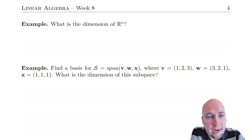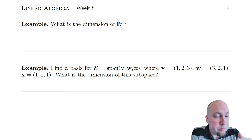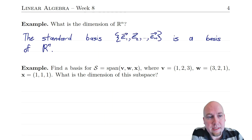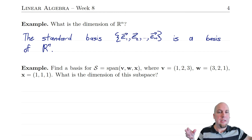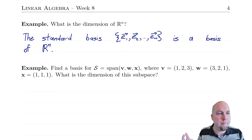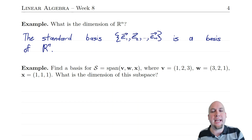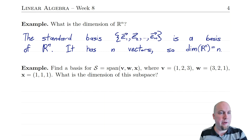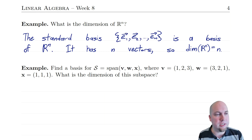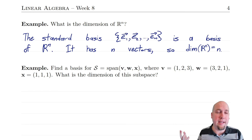What is the dimension of Rn? We construct some basis of Rn — we've already seen one: the standard basis. If you stick all of the standard basis vectors together into a set, you get a basis of Rn. You just count up how many vectors are in there: one, two, three, ... there are n vectors in that set. That set is a basis, so the dimension is n. There are lots of other bases of Rn, but they're all going to have n vectors.